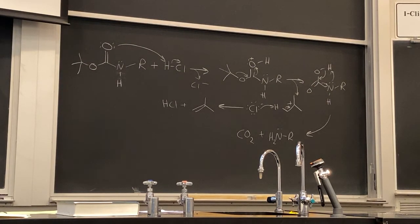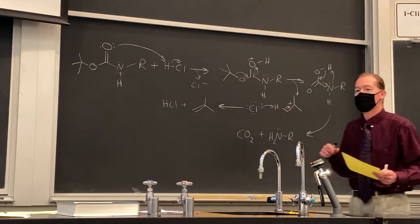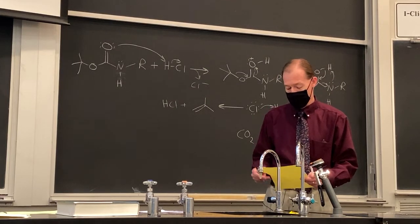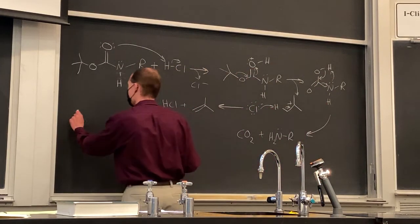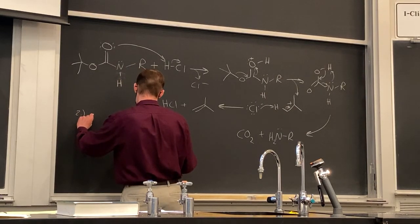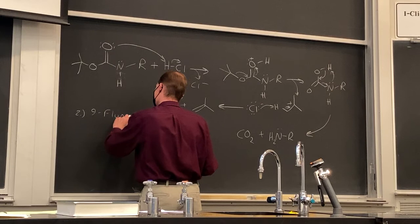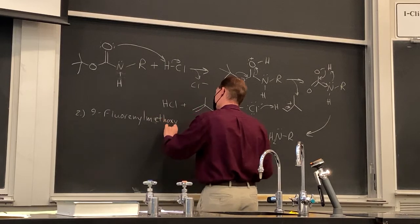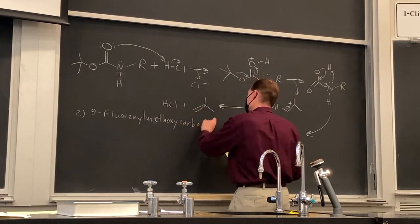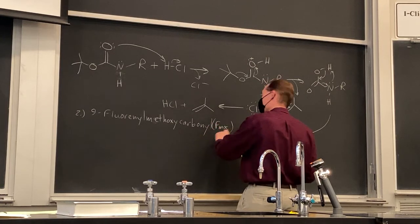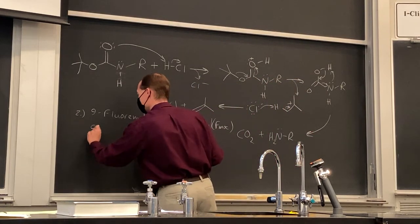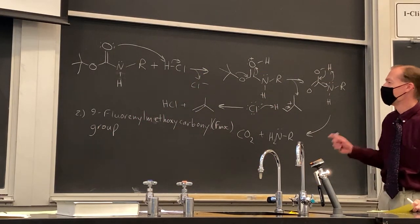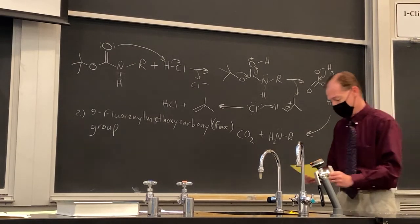The BOC group is cleaved under acidic conditions. Sometimes we want a protecting group that can be cleaved under basic conditions. For that we would use the 9-fluorenylmethoxycarbonyl group, known as FMOC. The FMOC group is complementary to the BOC group because it is a base-labile carbamate — stable to acid and cleaved with base.